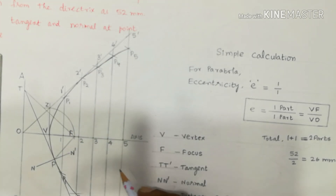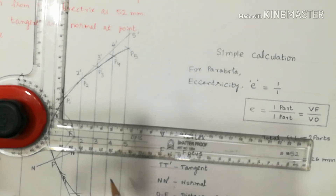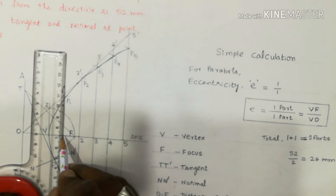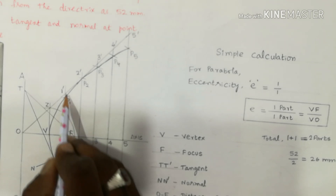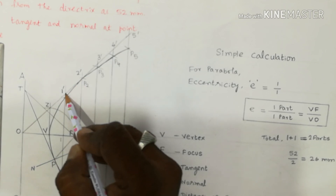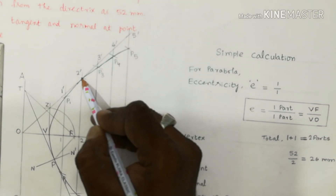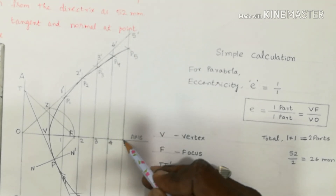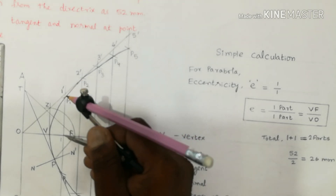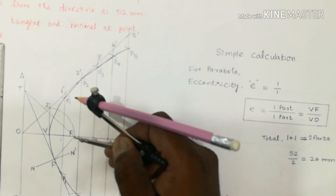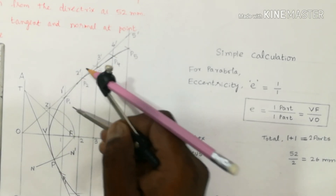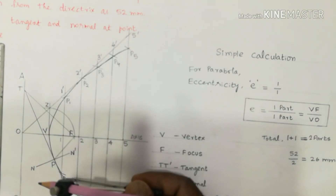Drop 5 vertical lines. The gap between vertical lines can be equal or unequal — the shape and size of the parabola will not change. On the first vertical line, the axis meets point 1; above and below are marked 1 and 1 dash. Take the distance 1 to 1 dash in your compass, keeping F as the fixed center (focus), and mark point P1 above and below the axis.